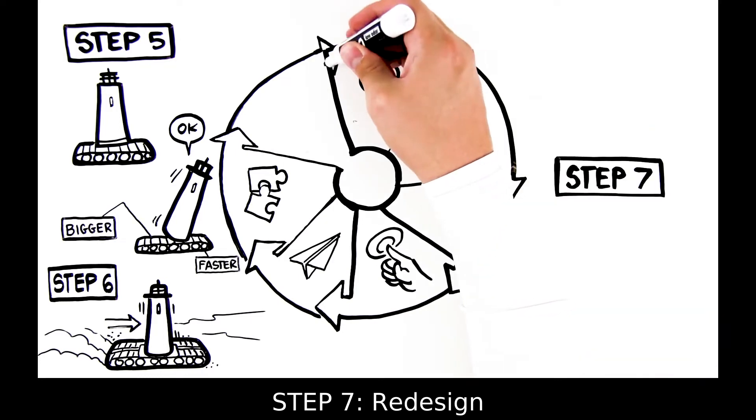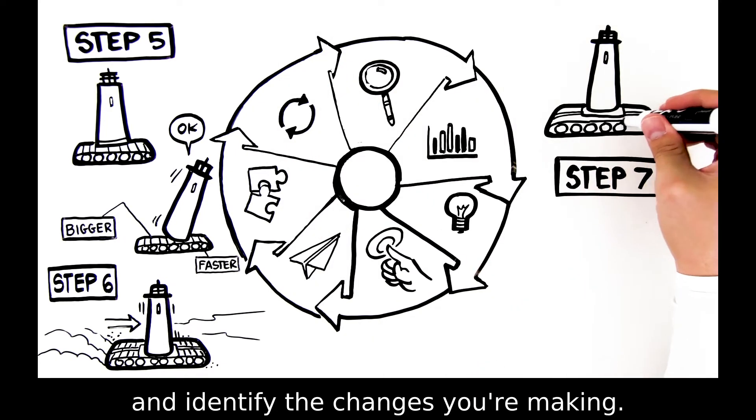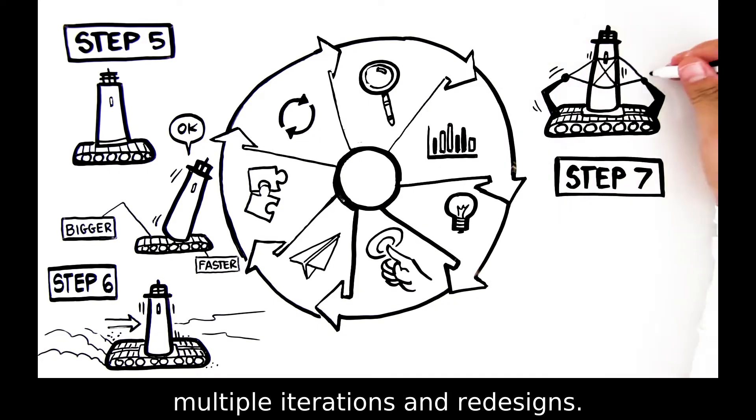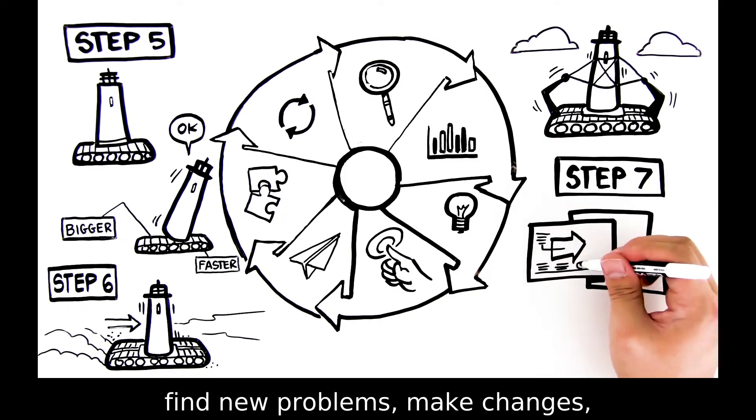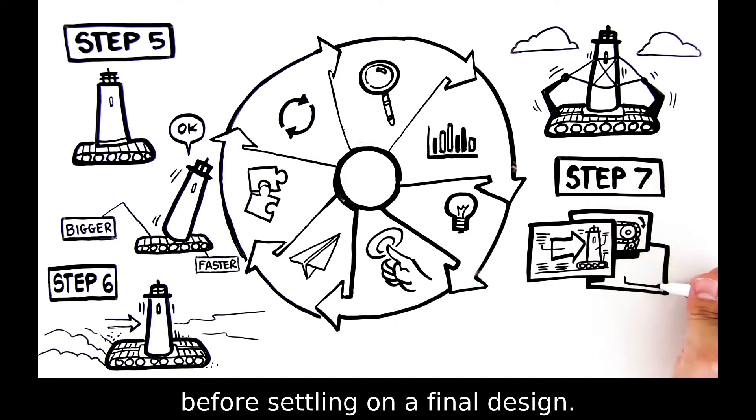Step 7: Redesign. Based on the results of your testing, make improvements and identify the changes you're making. The design process involves multiple iterations and redesigns. You'll likely test your solution, find new problems, make changes, and test new solutions before settling on a final design.